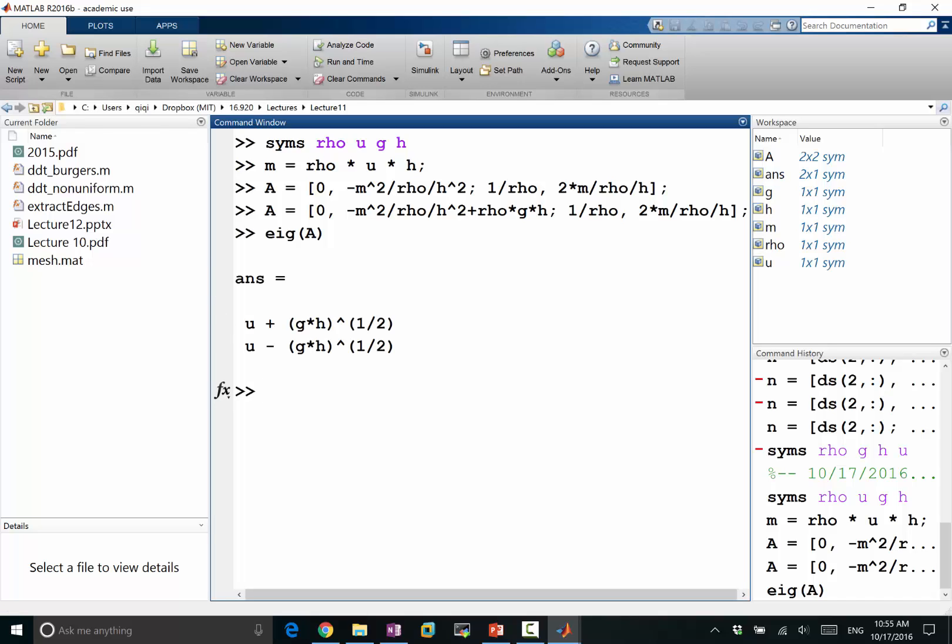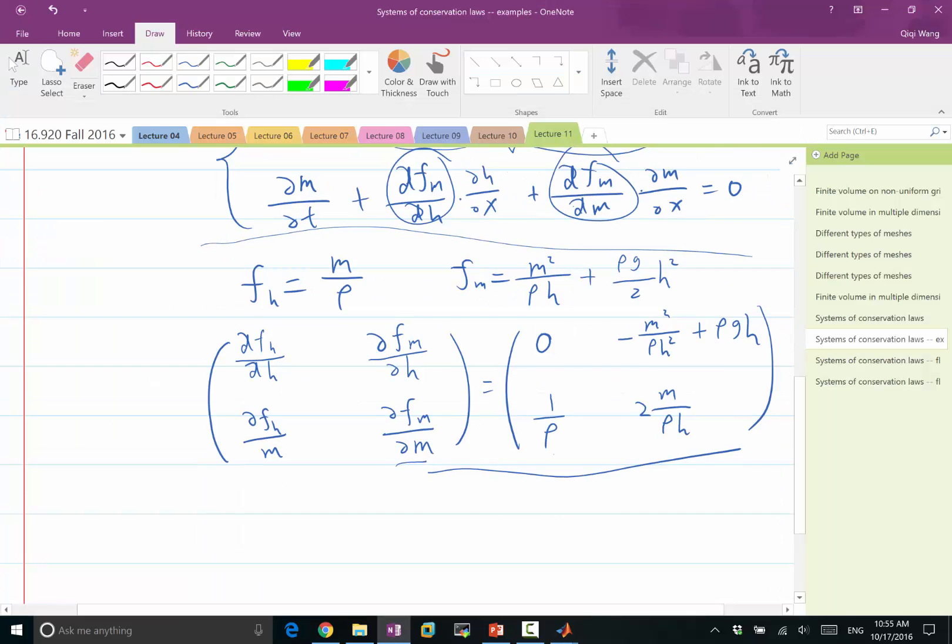Here's what we get. The two eigenvalues are U plus square root of GH and U minus square root of GH.